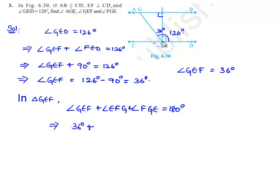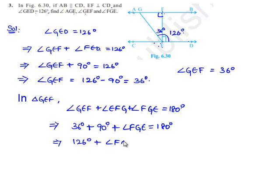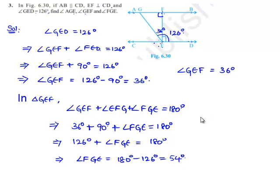Since FE is perpendicular to CD and AB is parallel to CD, EF is also perpendicular to AB. Therefore, angle EFG equals 90 degrees. So 36 degrees plus 90 degrees plus angle FGE equals 180 degrees, which gives 126 degrees plus angle FGE equals 180 degrees. Therefore, angle FGE equals 180 minus 126, which is equal to 54 degrees.